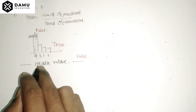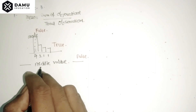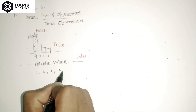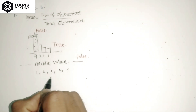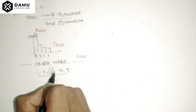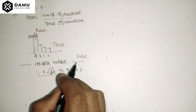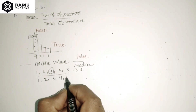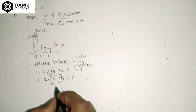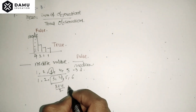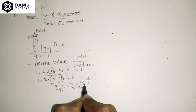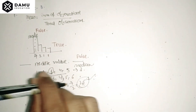The fourth statement is: the median of a set of numbers is always one of the numbers. For an odd set like 1, 2, 3, 4, 5, the median is 3, which is in the set. But for an even set like 1, 2, 3, 4, 5, 6, we take the average of the two middle values: (3 + 4) / 2 = 3.5, which is not in the set. So that statement is also false.